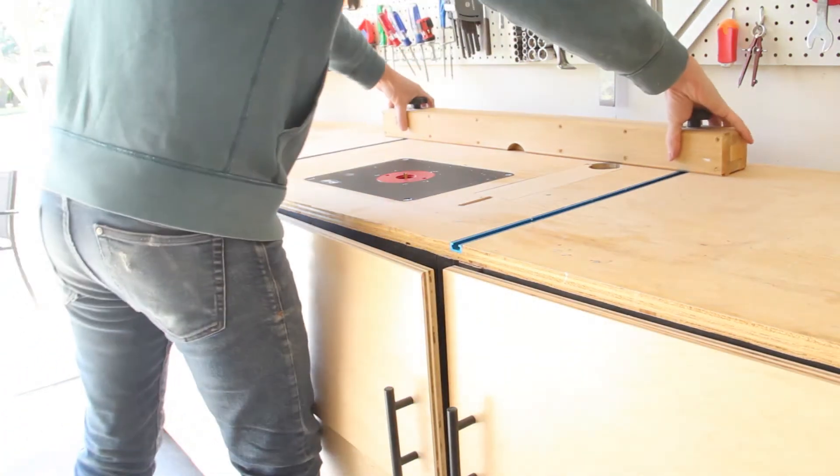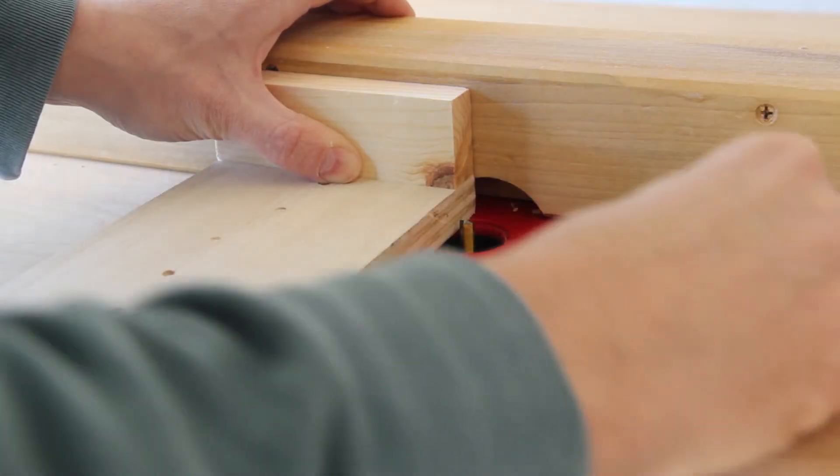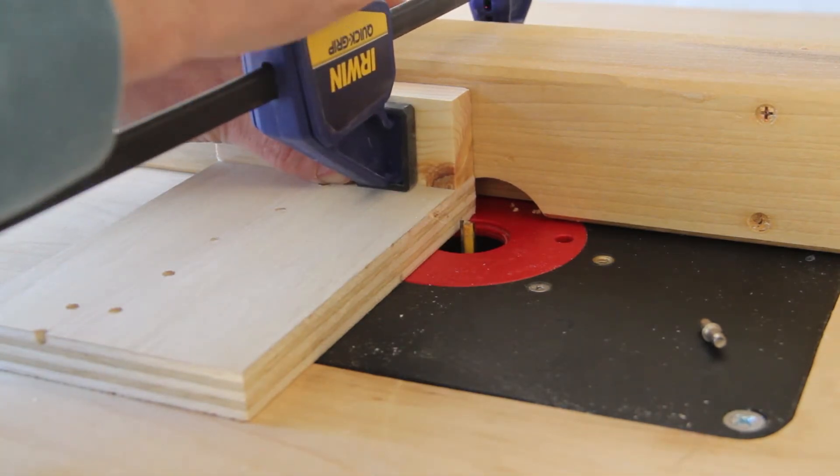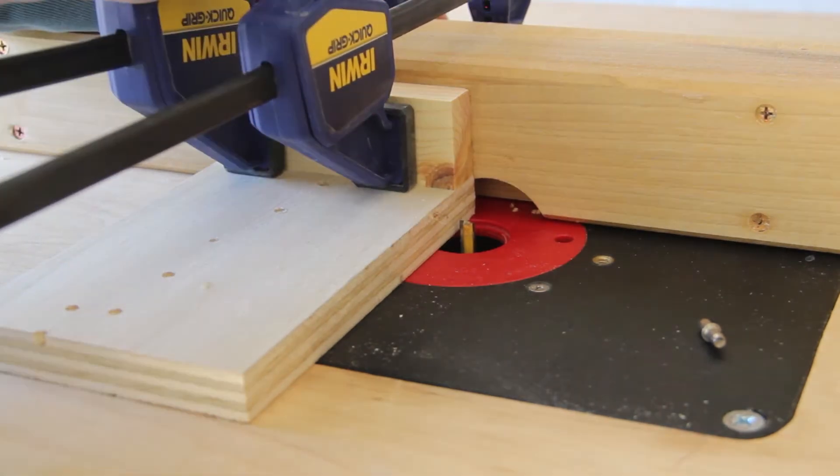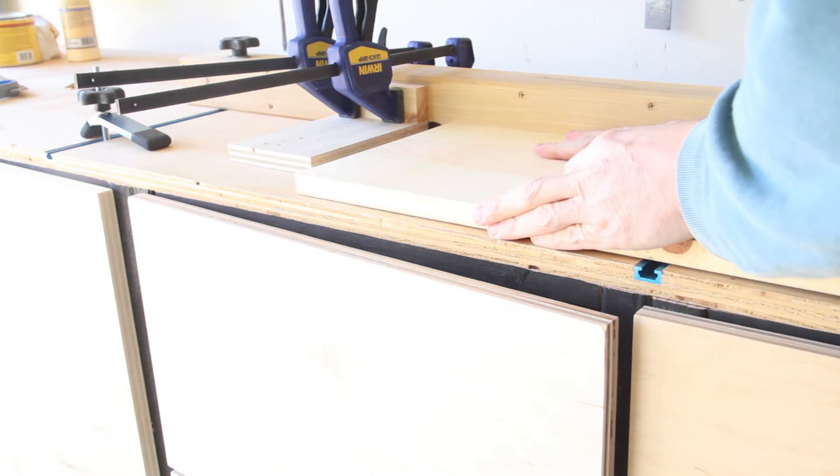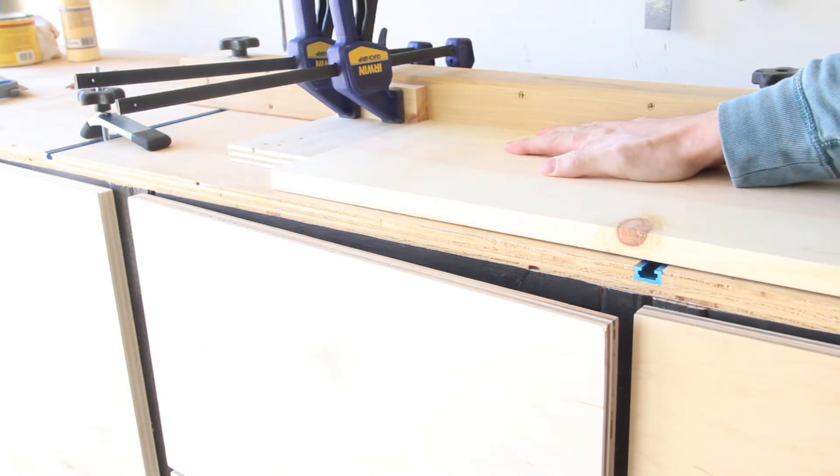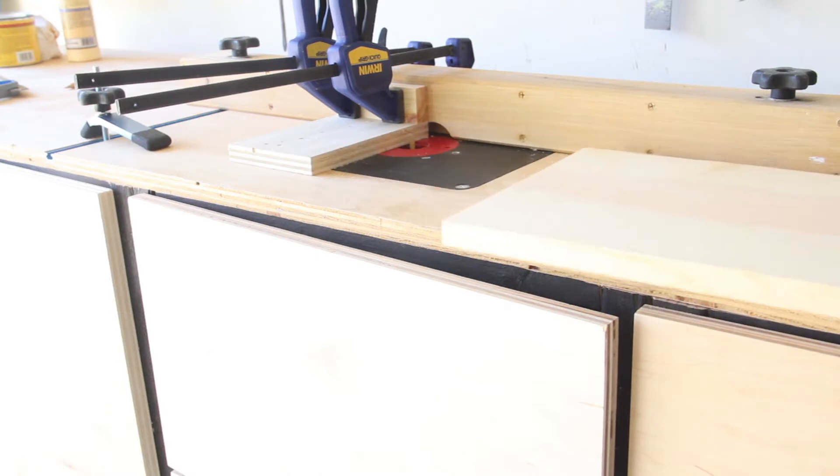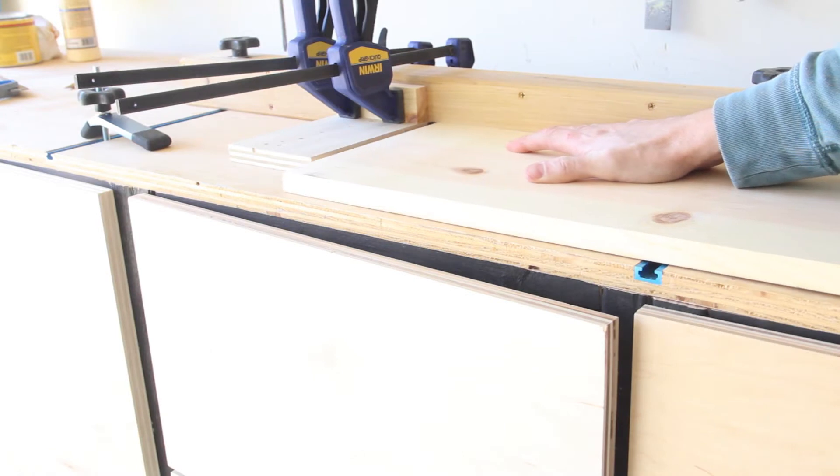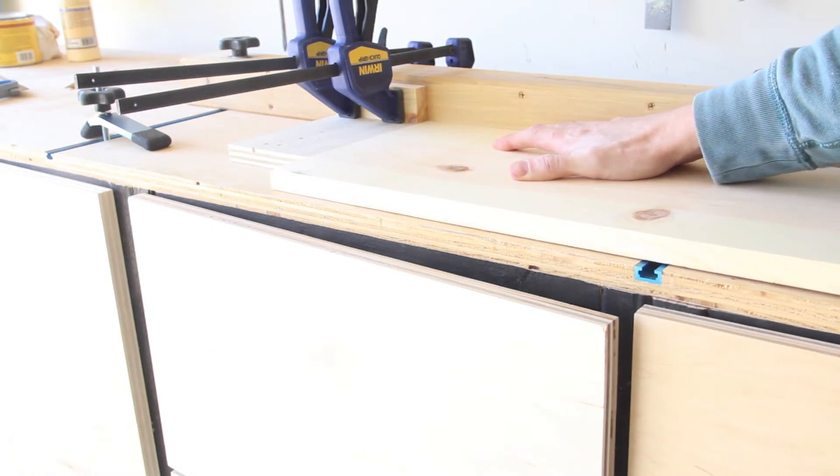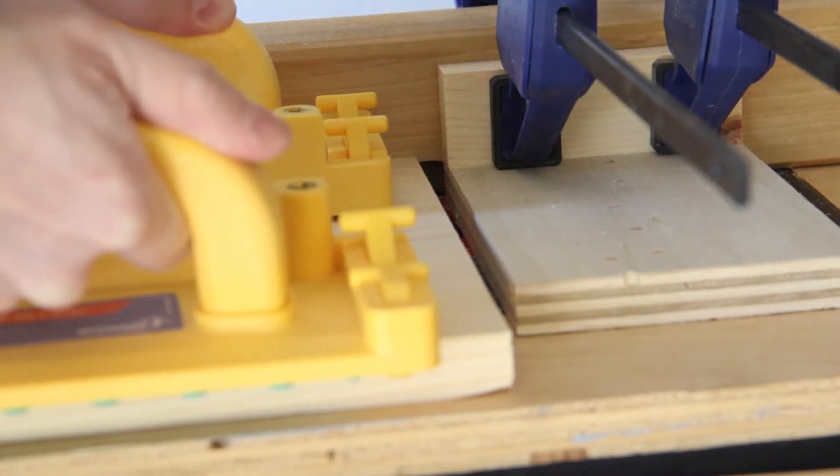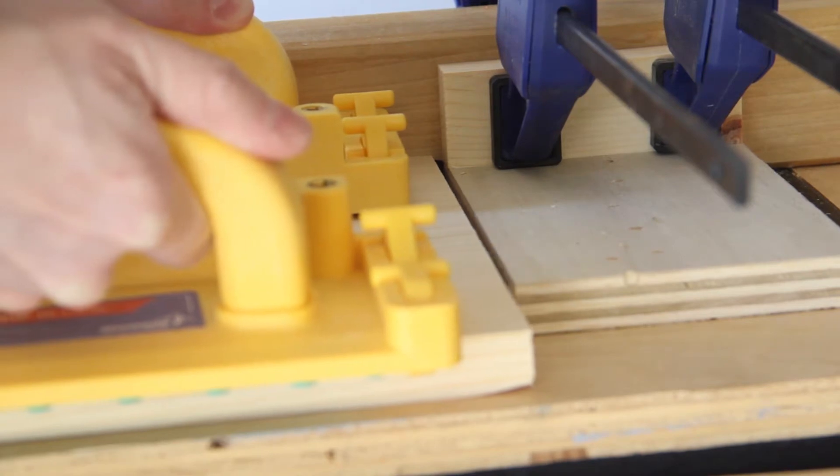Then here at the router table I set up a quarter inch router bit to cut out notches on each shelf. I clamped this little stop block onto the table fence to make sure I cut those notches at a consistent depth. I had to turn each shelf around to notch out the opposite corner of each board, and then put the fence on the other side of the bit to carve out the other two notches.